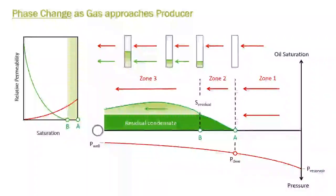Before we explain how to model gas condensate PVT in actual software, let's explain why it's important to consider phase change in gas condensate reservoirs. In gas condensate reservoirs, as we move from the far field to the sand face of the producer, we drop in pressure, like we have for other reservoirs. But as we drop the pressure from the reservoir pressure to the dew point and then lower, we get three zones in gas condensate reservoirs.